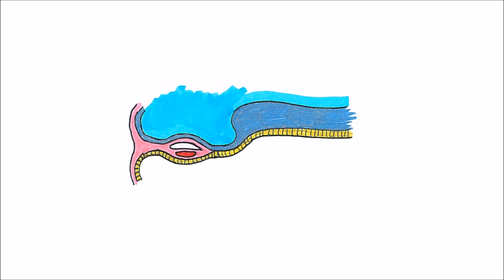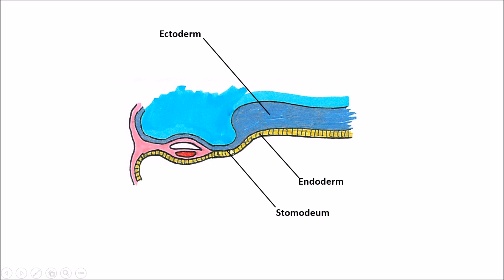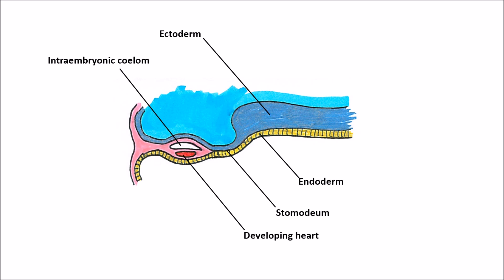The intraembryonic coelom forms a horseshoe-shaped cavity around not only the lateral side of the body but also around the head. Viewing a sagittal (midline) cut of the developing embryo: endoderm is just below the ectoderm, and there's a place just ahead of where the brain is forming called the stomodeum — where the ectoderm and endoderm remain completely adherent to each other. Just cranial to that is our developing heart; the heart actually develops in front of our brain early on, and the intraembryonic coelom passes through that space at the bend of the horseshoe.